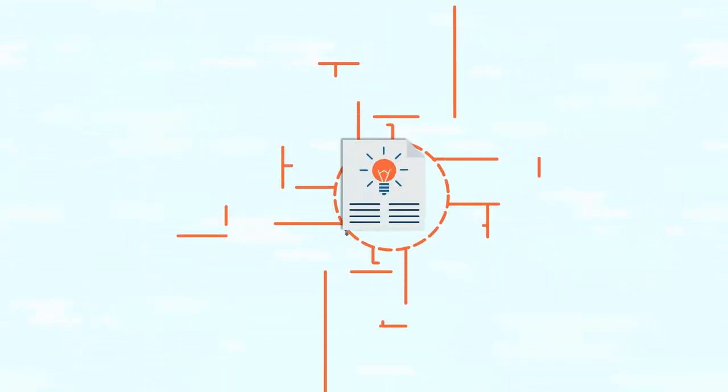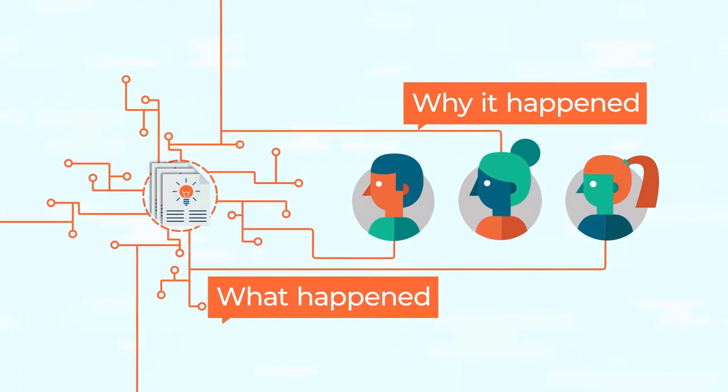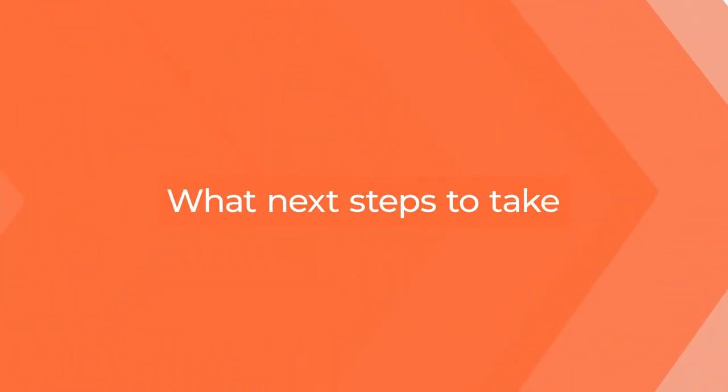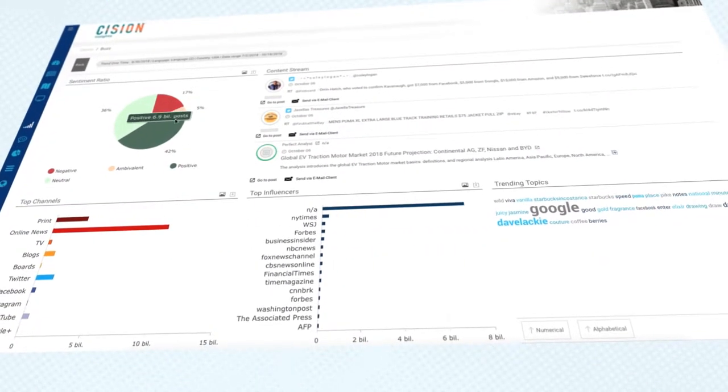Cision Insights brings together automated and human expertise to tell you not just what happened, but why it happened and what next steps to take. This degree of holistic analysis has long been missing in comms reporting.